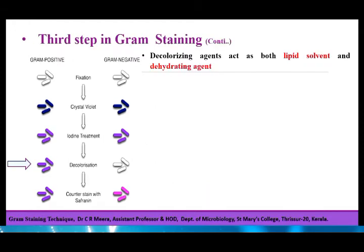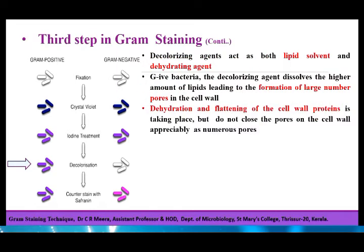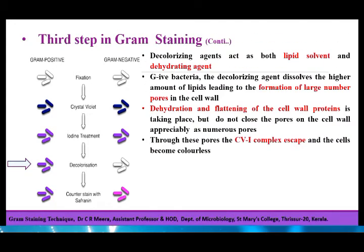The decolorizing agents act as both lipid solvent and dehydrating agent. In Gram negative bacteria, the decolorizing agent readily dissolves the higher amounts of lipids, leading to the formation of large pores in the cell wall. At the same time, dehydration and flattening of cell wall proteins takes place but does not close the pores appreciably, as numerous pores are produced on the Gram negative cell wall. Through these pores, crystal violet-iodine complex leaks out and the cells become colorless.